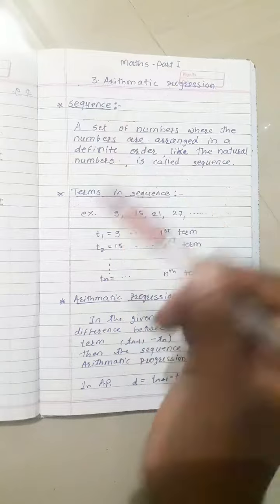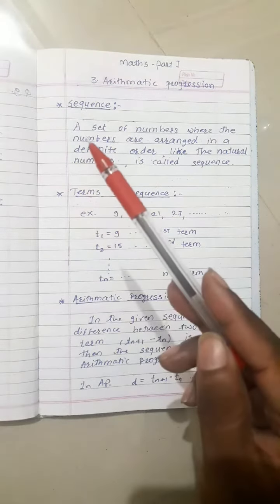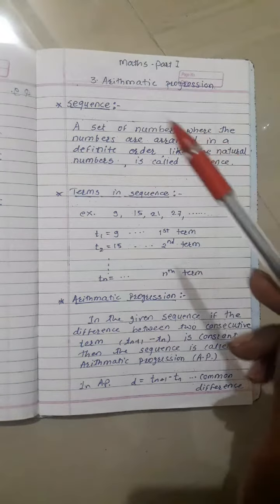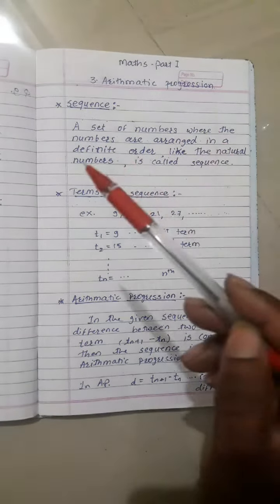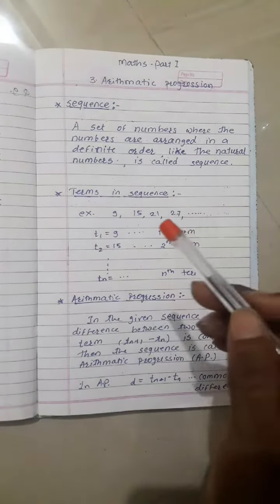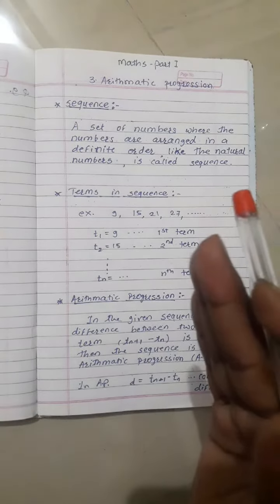A sequence is a set of numbers where the numbers are arranged in a definite order, like the natural numbers. Natural numbers 1, 2, 3 have a definite arrangement order.